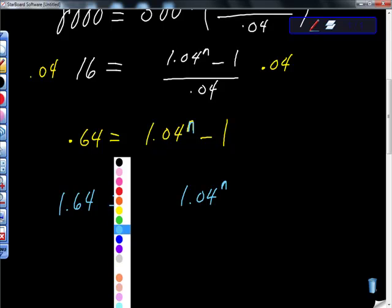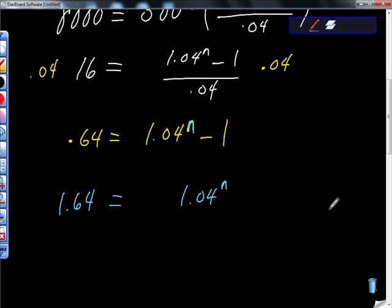This is where it gets a little bit tricky. Here I usually talk about using the log of convenience, because remember, what we want is this. We want to get this n by itself. So what I'm going to do is I'm going to apply log base 1.04 of 1.04 to the n, to both sides.